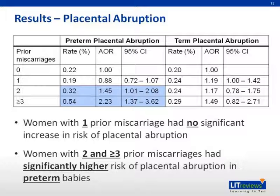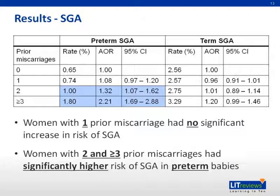With regards to placental abruption, women with one prior miscarriage had no significant increase in risk. However, women with two and three or more prior miscarriages had significantly higher risk of placental abruption in preterm babies. With regards to small for gestational age, women with one prior miscarriage had no significant increase in risk of SGA, but women with two and three or more prior miscarriages had significantly higher risk of SGA in preterm babies.